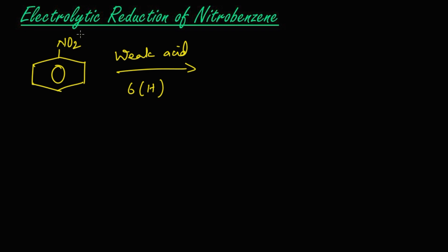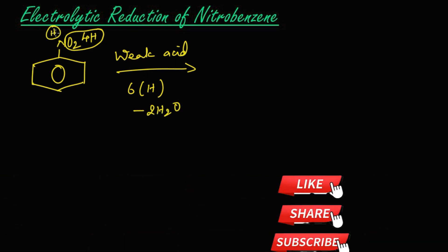Four hydrogens and these two oxygens will leave as two H₂O molecules. The remaining two hydrogens will get attached to this nitrogen, and we get aniline as the product.